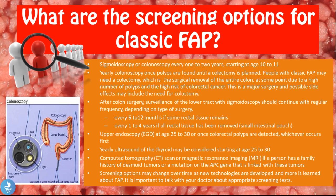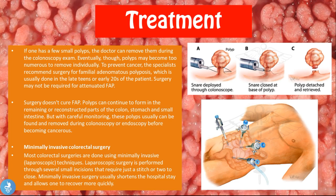Regarding treatment, if one has few small polyps, the doctor can remove them during a colonoscopy exam. Eventually, polyps may become too numerous to remove individually, and specialists recommend surgery, usually done in the late teens or early twenties. Surgery may not be required for attenuated FAP. Importantly, surgery doesn't cure FAP — polyps can continue to form in remaining or reconstructed parts of the colon, stomach, and small intestine, but careful monitoring allows them to be found and removed before becoming cancerous.